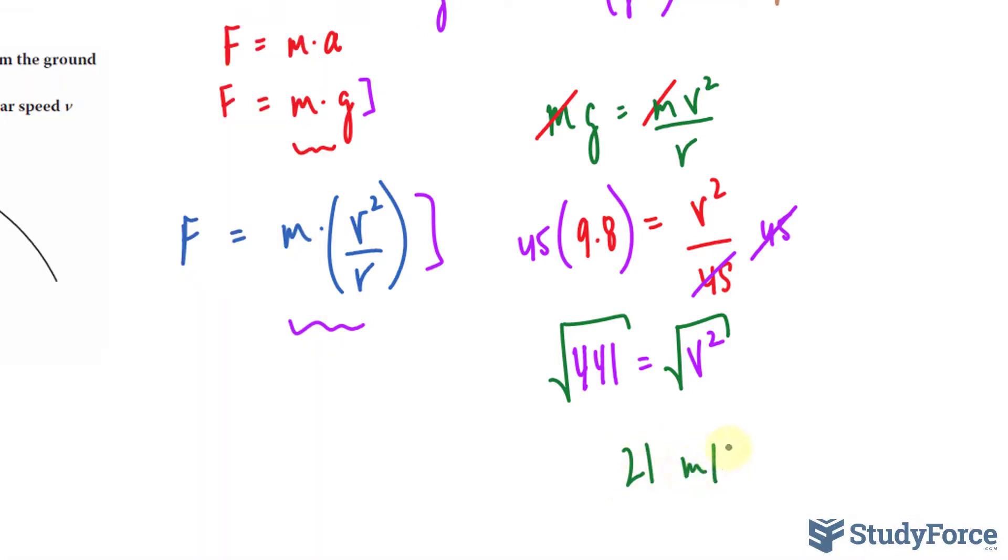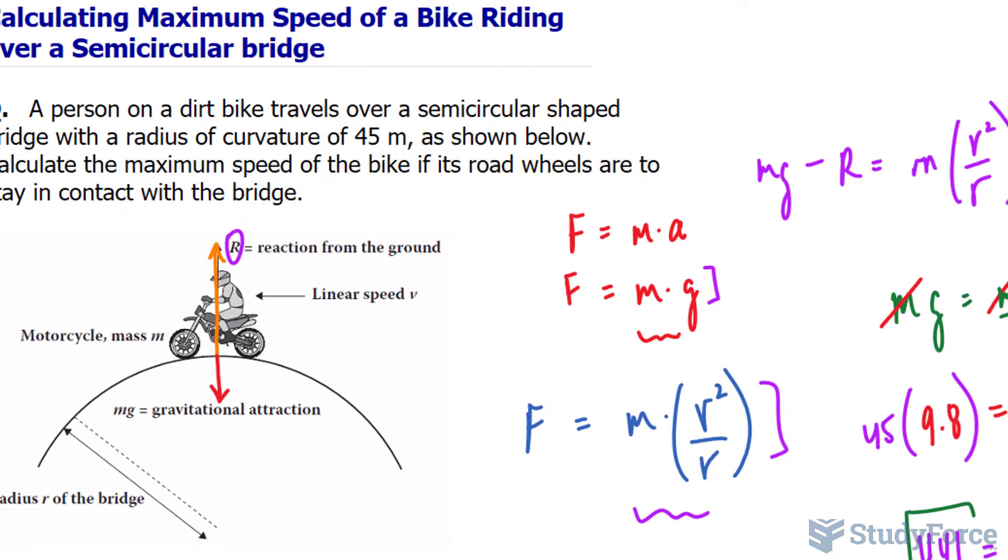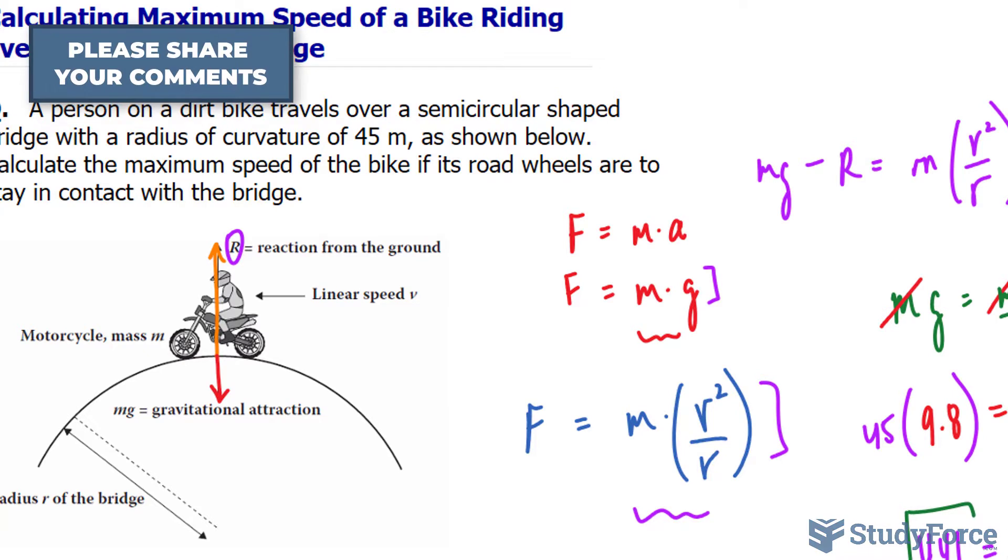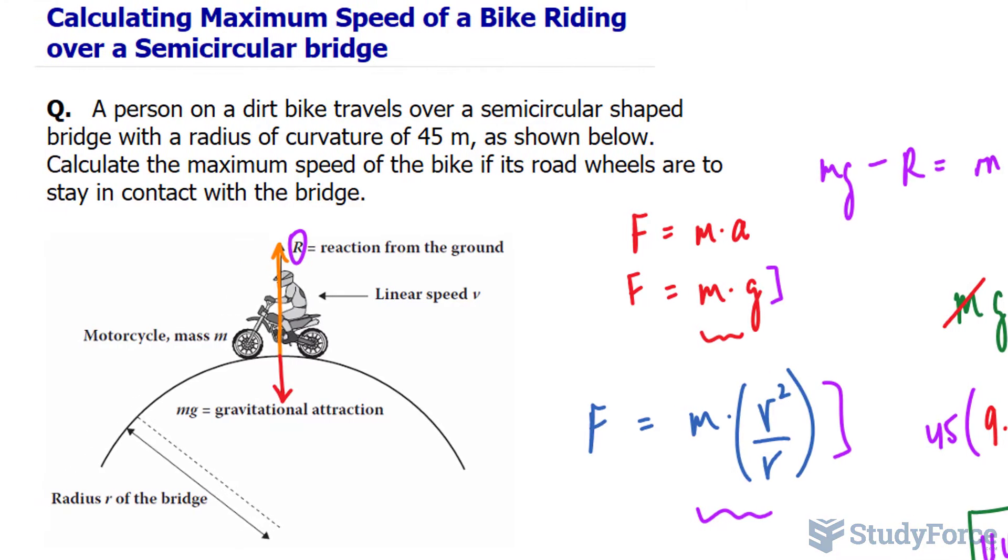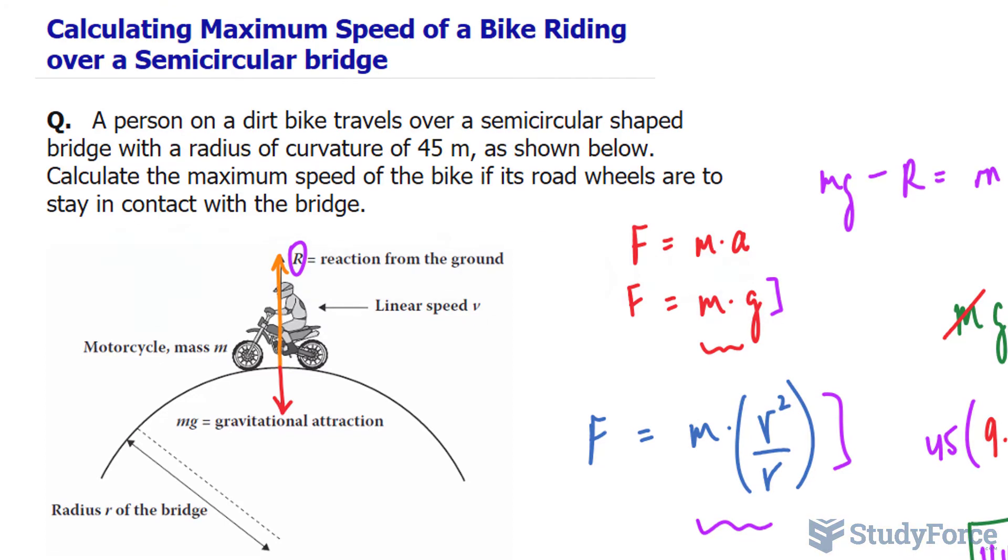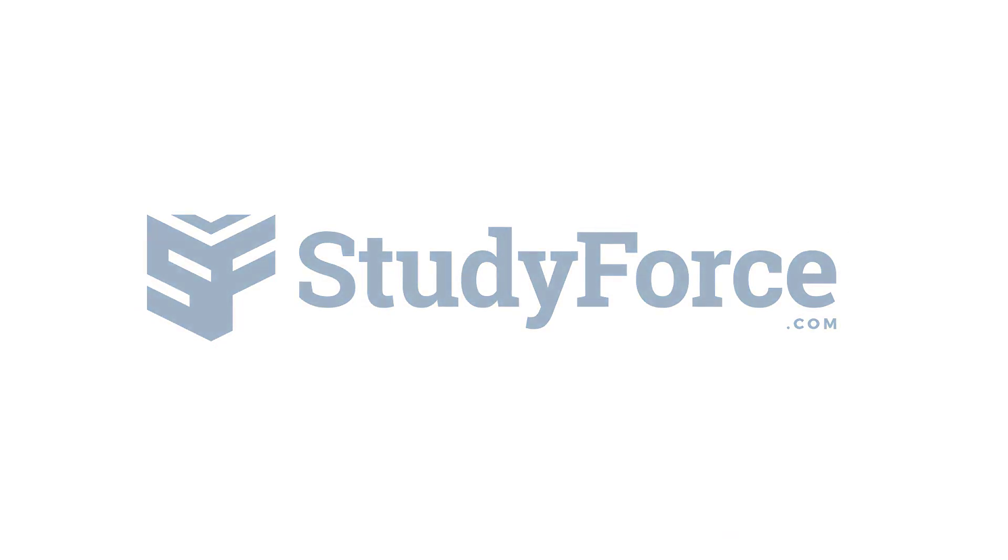21 meters per second is the velocity. Let's bridge it back to what we were doing here - this is the maximum speed of this bike if its road wheels are to stay in contact. Anything greater than this value will result in it lifting off the ground. And so there you have it. That is how to calculate the maximum speed of a bike riding over a semicircular bridge.